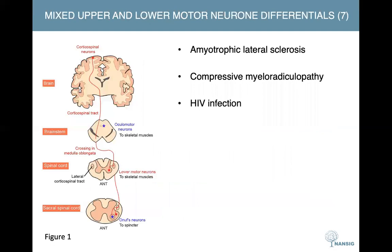Over the next three slides are differential diagnoses to consider when seeing patients with upper or lower motor neuron signs. The first slide shows differentials for patients with a mix of both upper and lower motor neuron signs. In this case, besides ALS, you can also consider compressive myeloradiculopathy or HIV infections.